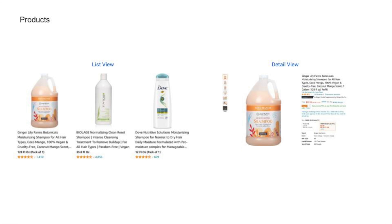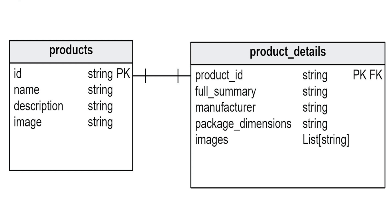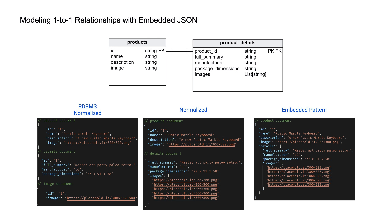This looks like a product that has a high-level set of fields, and when you dive in there's further detail. To optimize performance, you might not want to get all information about a product when you don't care about the reviews and extra details yet. In a traditional database you might create a product table and a product details table. In NoSQL you might call those documents or collections — a product collection and a product details collection.